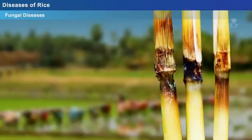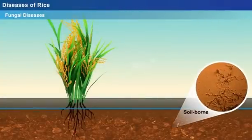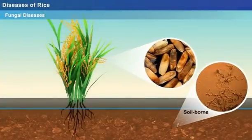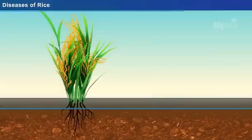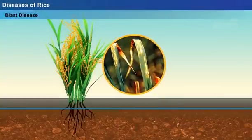This lesson briefly describes the most commonly occurring rice diseases in the Asian continent. Approximately, there are more than 40 fungal diseases of rice. They may be either soil-borne, seed-borne, or air-borne. Here comes the description of the most commonly occurring fungal diseases of rice plant. Blast disease: the blast is caused by the fungus Magnaporthe grisea.